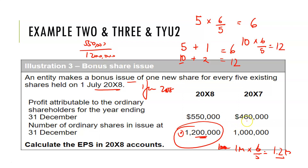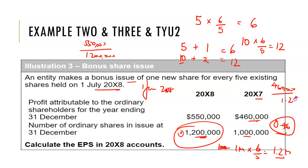My EPS for this year is 550,000 divided by 1.2 million. Doing that calculation: 550,000 divided by 1.2 million gives approximately 0.458, so you can call this 0.46.